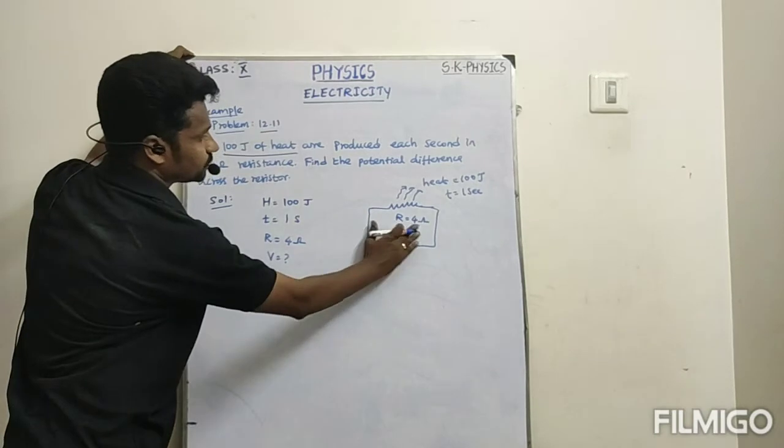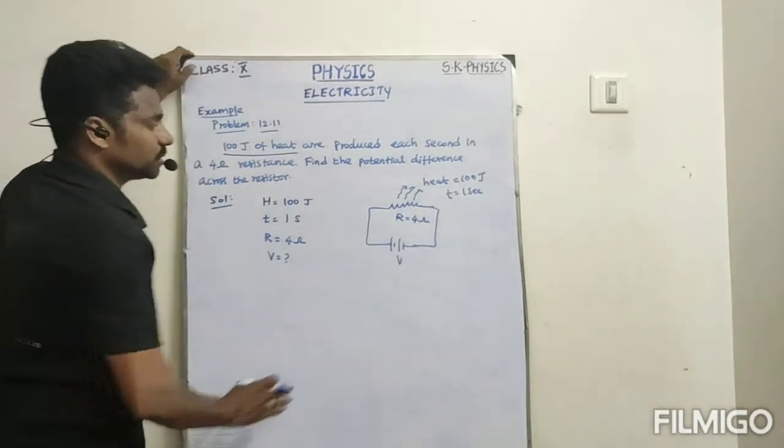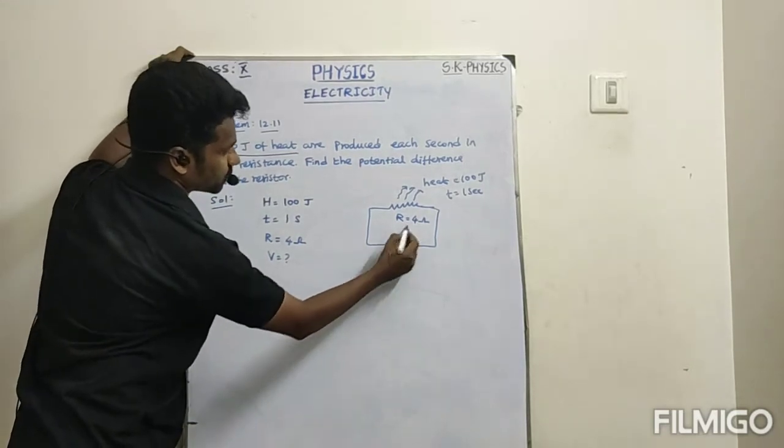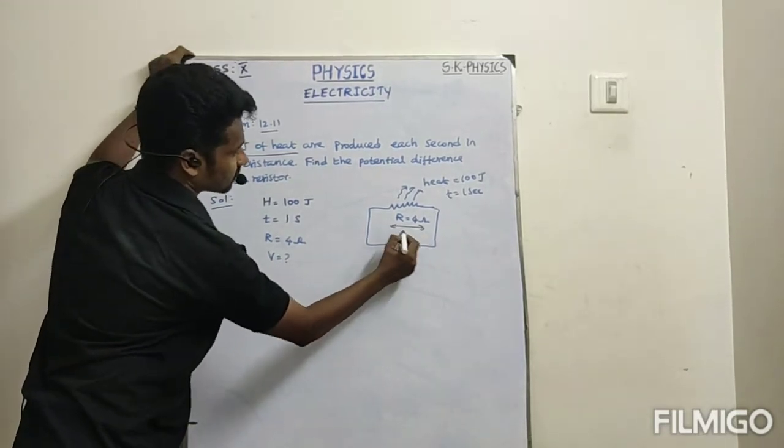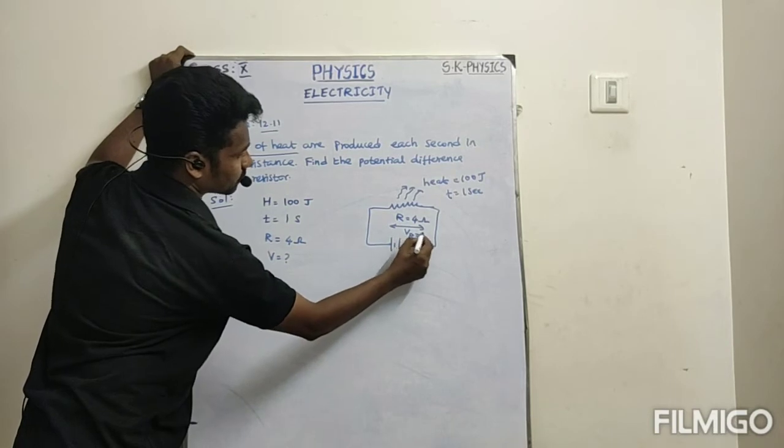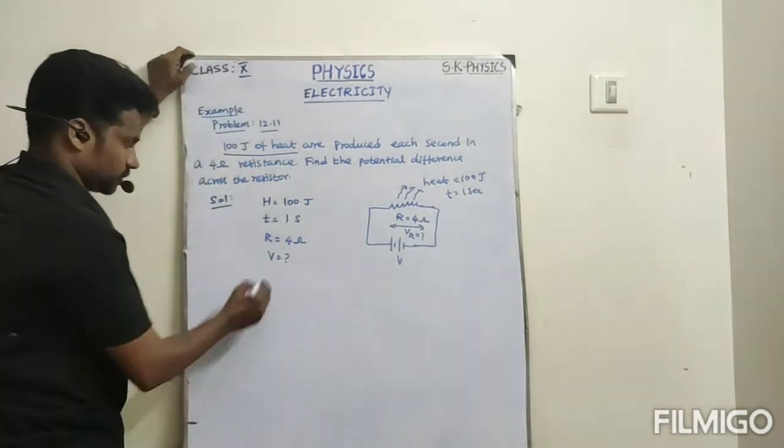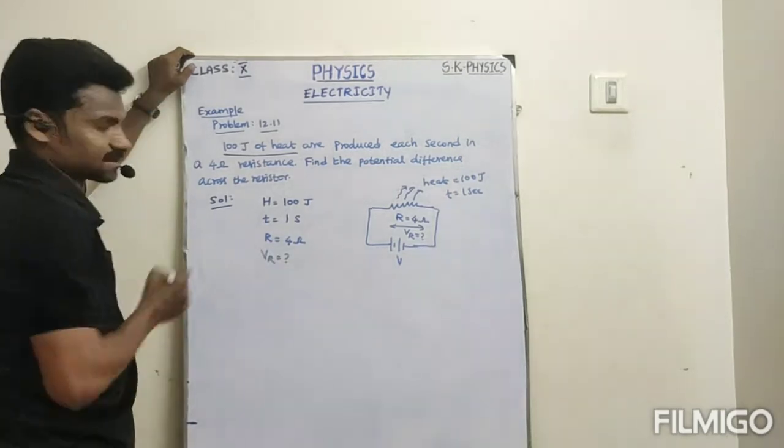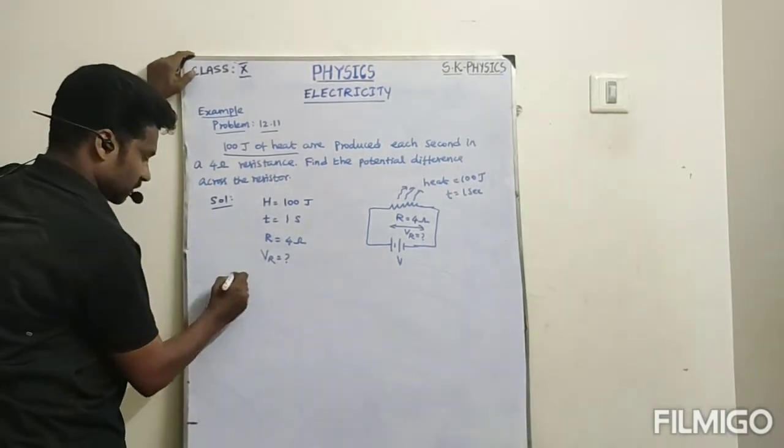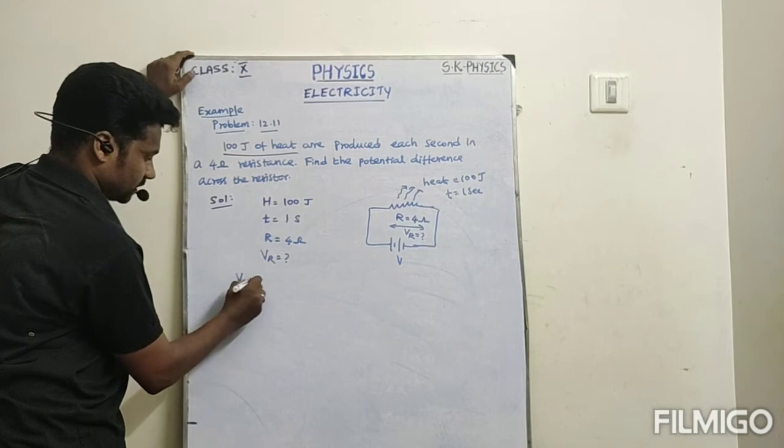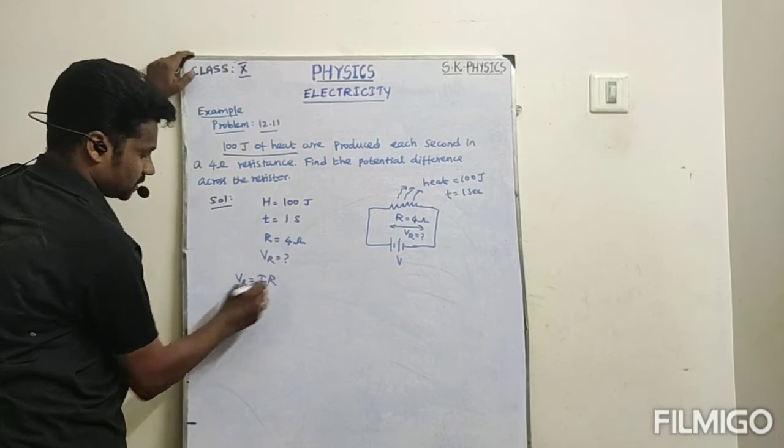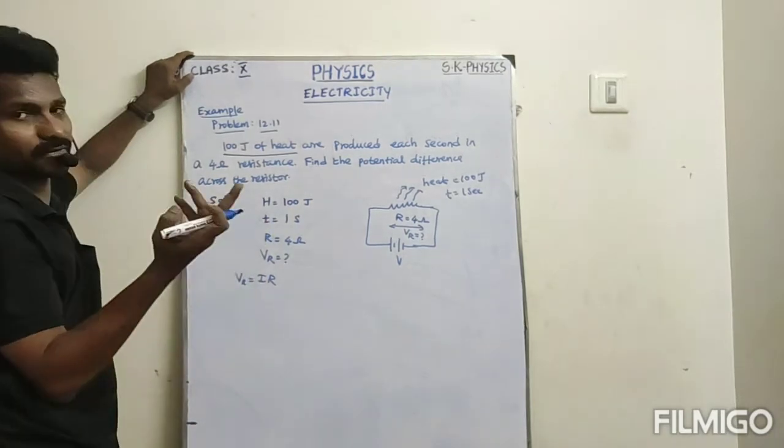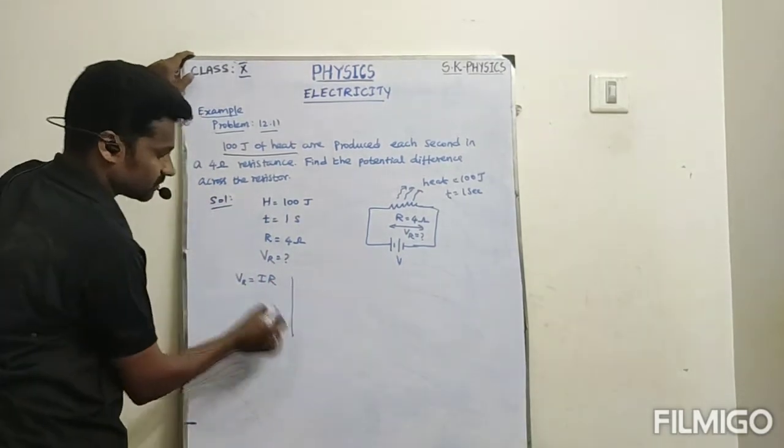Now potential across the resistor is V. For our reference, we know the formula V is equal to I into R. R value we know, but what about I value? You should find the I value first.